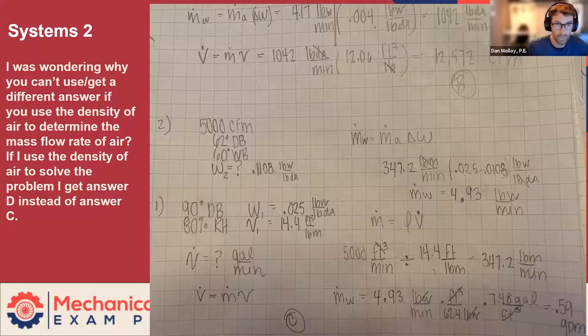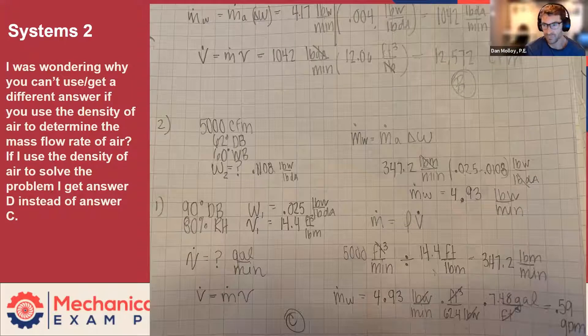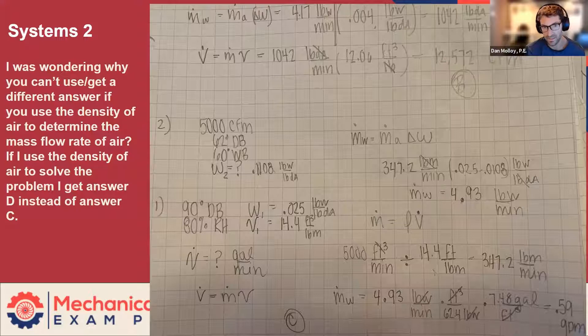Okay, systems two. I was wondering why you can't use, or you get a different answer if you use the density of air to determine the mass flow rate of air. If you use the density of air to solve the problem, I get D instead of C.